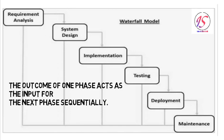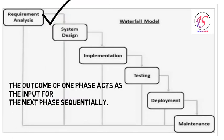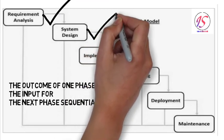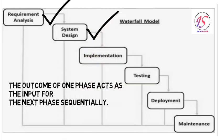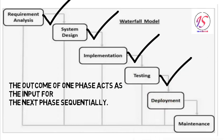The sequential phases in Waterfall Models are requirement gathering and analysis, system design, implementation, integration and testing, deployment of system, and maintenance.